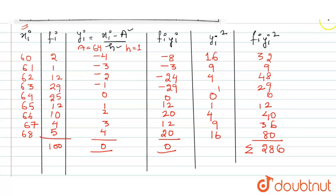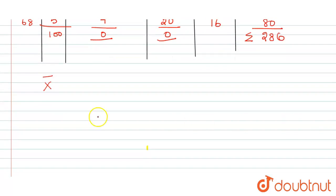So now let us calculate the value of the mean by applying the formula, that is mean x bar equals to, the formula to find the mean for the shortcut method is assumed mean plus h, that is the class size or the class difference, that is summation fi yi divided by summation fi.